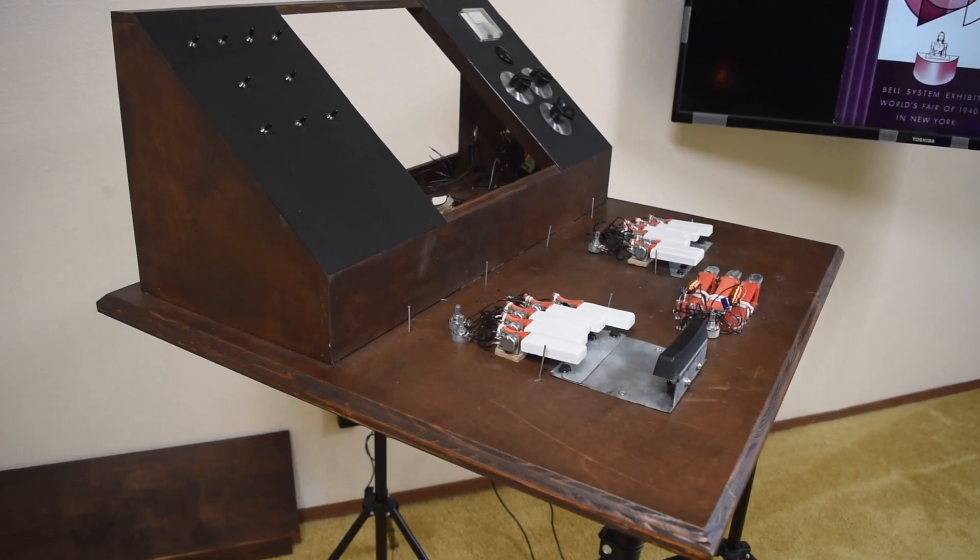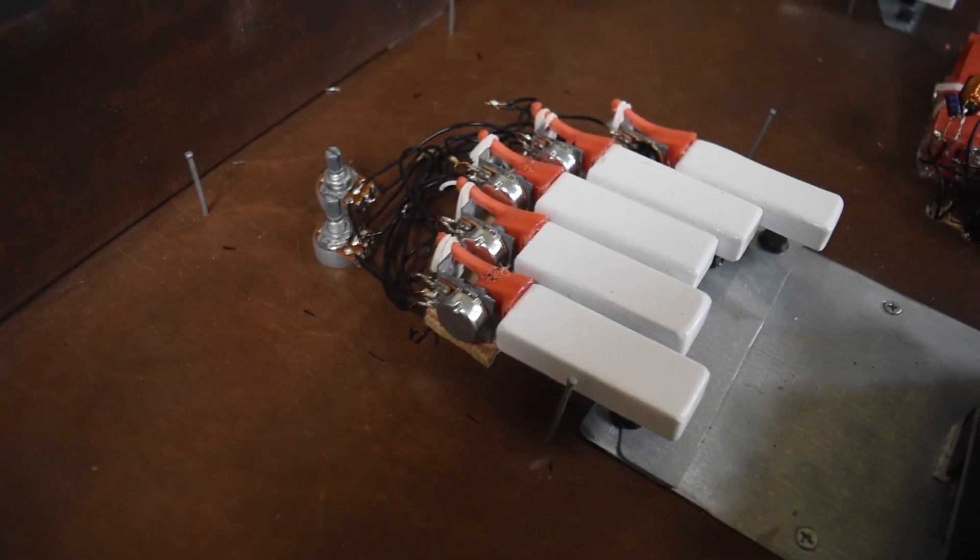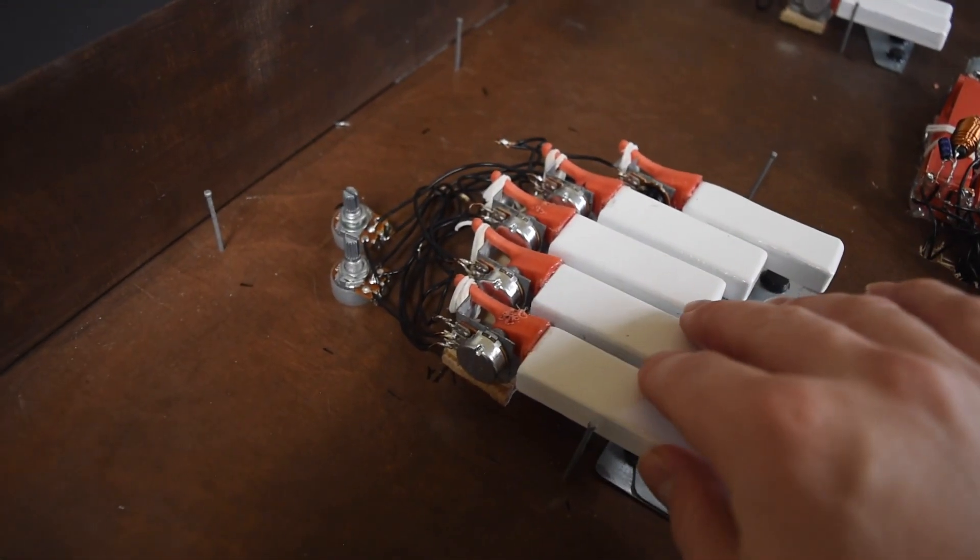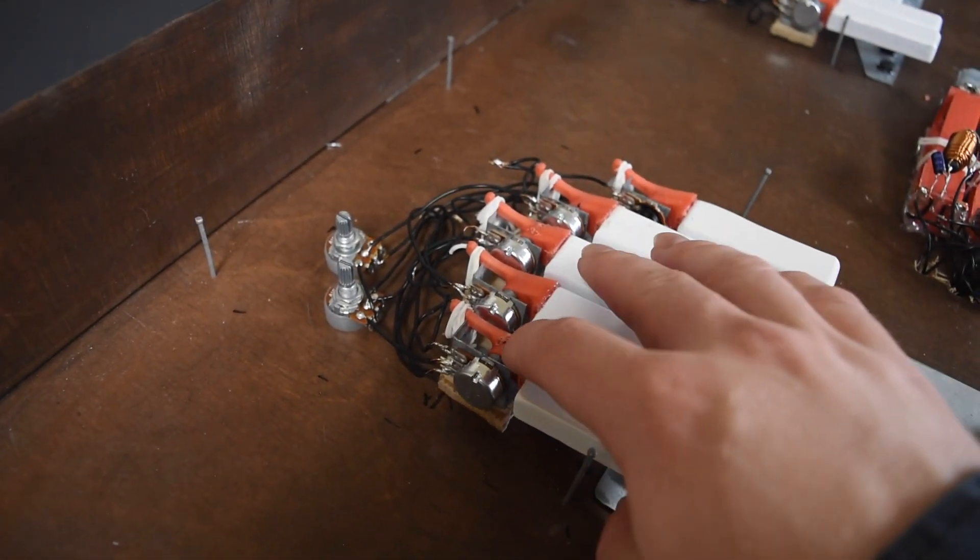Now let's take a look at how my Voter is constructed, and I'll show you the individual parts. Here's the Voter with all of its covers removed. Let's first take a look at the keys. Each key contains a potentiometer, connected to a piece of wood for the key itself by a 3D printed knob which I designed.